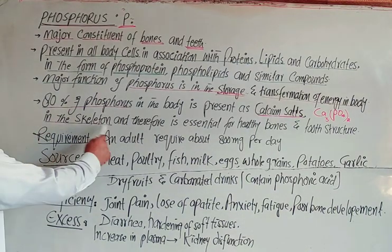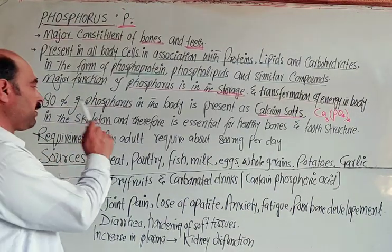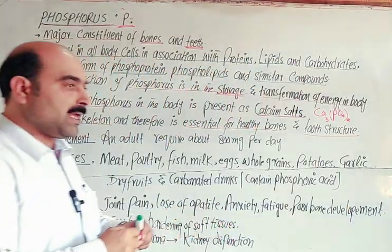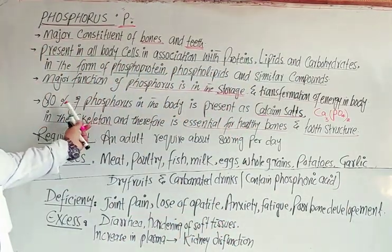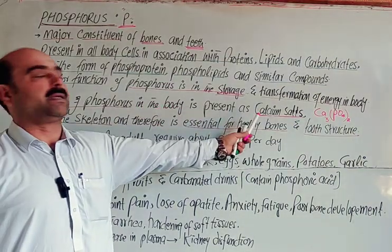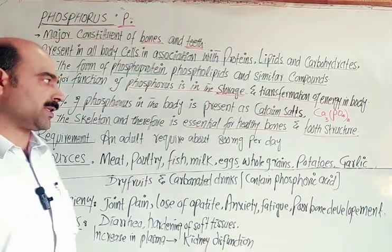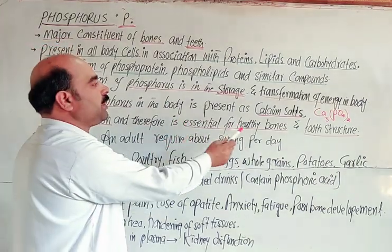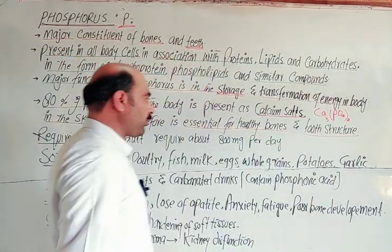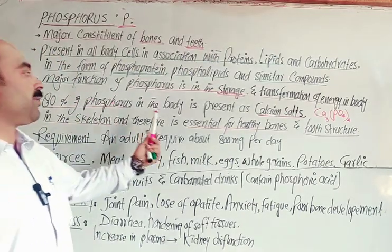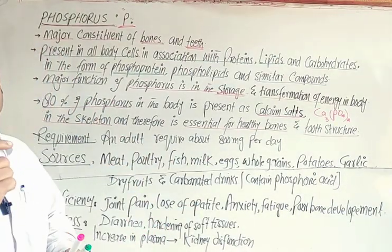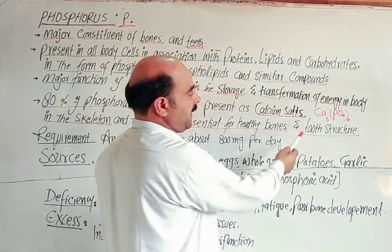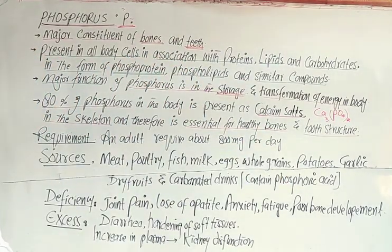This calcium phosphate is found in the skeleton. Students often get confused: 80% of phosphorus in the body is present as calcium phosphate — for example, in the form of calcium phosphate in the skeleton. Calcium and phosphorus are essential for healthy bones and tooth structure.